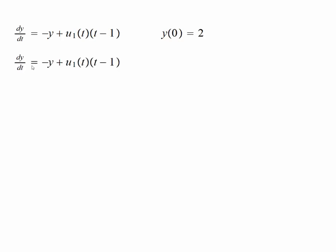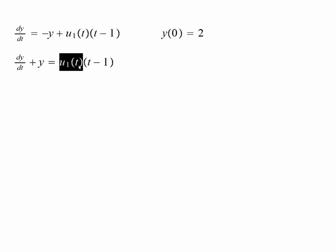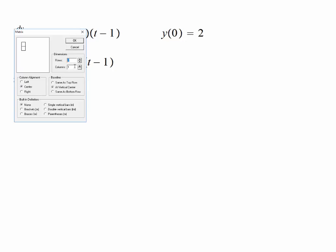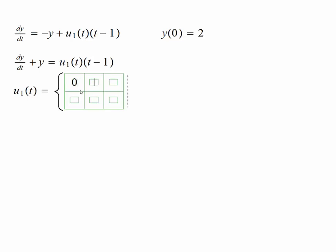I'm going to transfer this y to the left-hand side. First, let me recall what this function u₁ is. u₁ is the unit step function, which takes on values like this: it is going to be 0 if 0 ≤ t < 1.